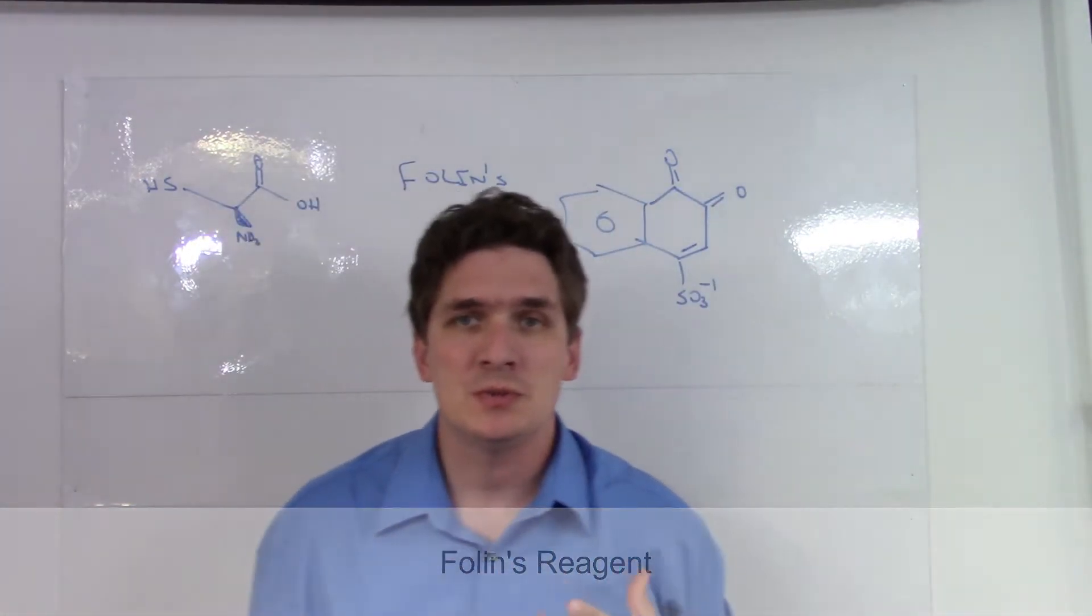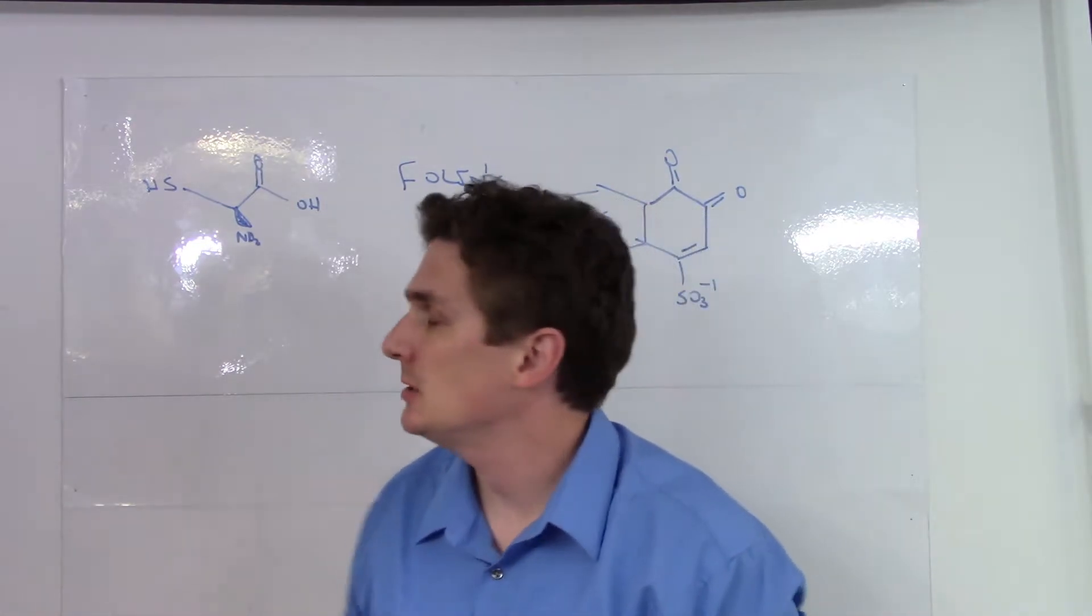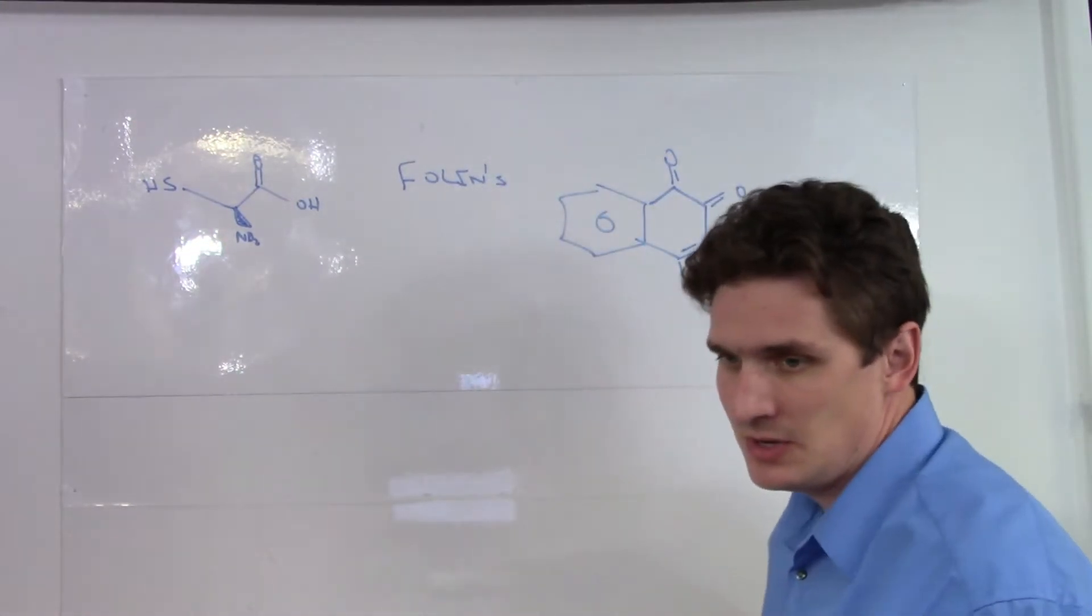What will happen with Follin's Reagent is that cysteine will react with the amine group here to basically substitute off the sulfur.